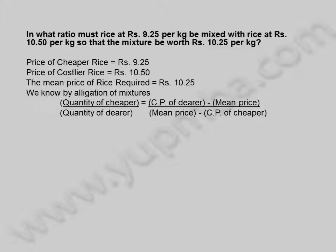quantity of cheaper by quantity of dearer is equal to cost price of dearer minus mean price, by mean price minus cost price of cheaper. Substituting the values in the formula,